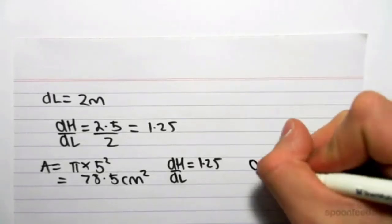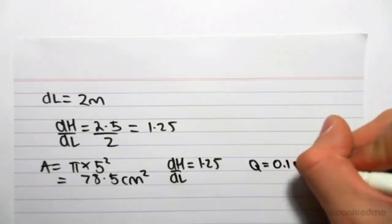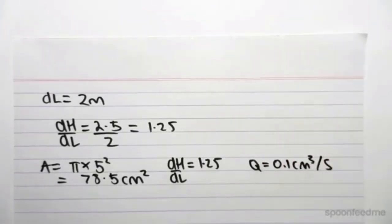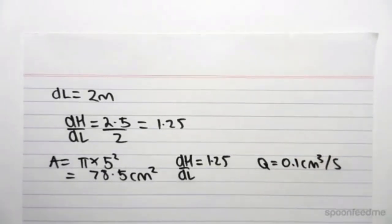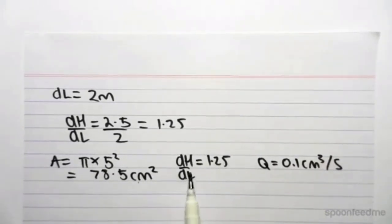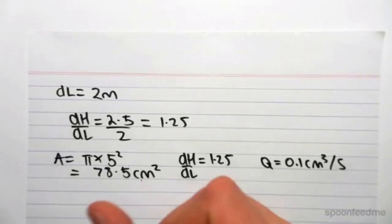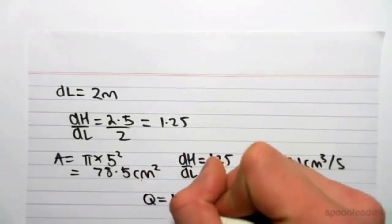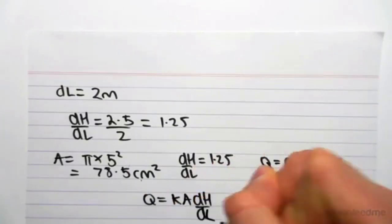We have dH on dL equals 1.25, and we have Q equals 0.1 centimeters cubed per second. Just, again, just be consistent with units. I'm dealing with centimeters in seconds. dH and dL is unitless.